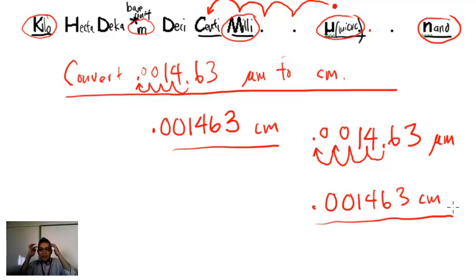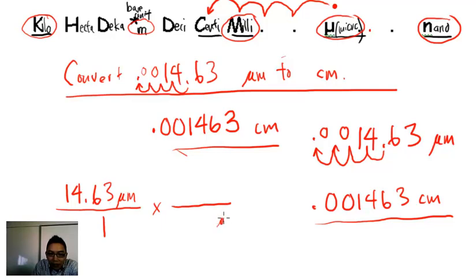There's also dimensional analysis. If I have 14.63 micrometers and need to convert to centimeters, I turn this into a fraction over 1 and multiply by something to get rid of micrometers. Micrometers down here, and the unit I want to change into - I know how to go from micrometers to millimeters pretty easily. How many millimeters in one micrometer? One millimeter contains one thousand micrometers - that's the correct conversion. When I multiply this, the micrometers cross out. I'm still going to end up with millimeters though.